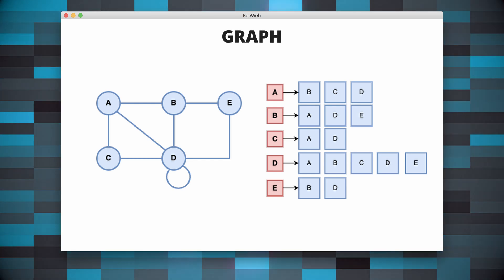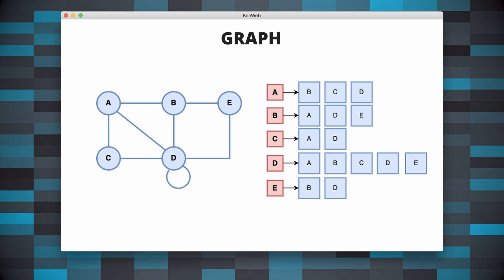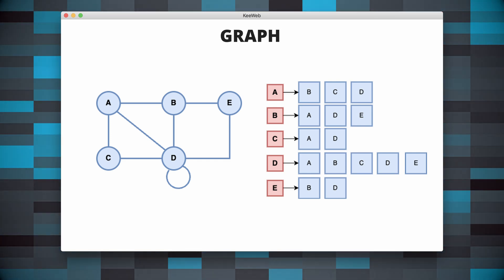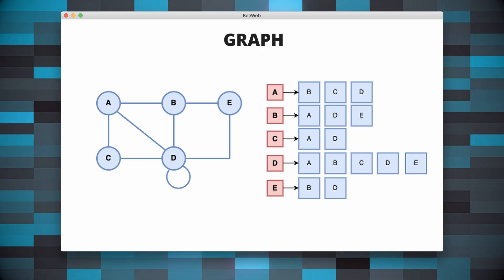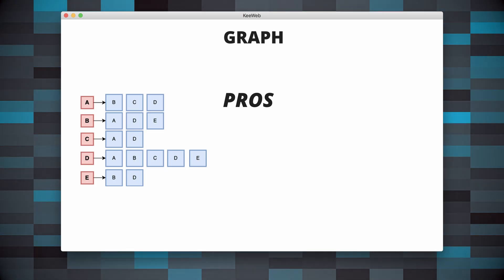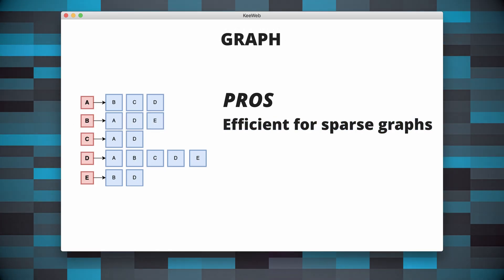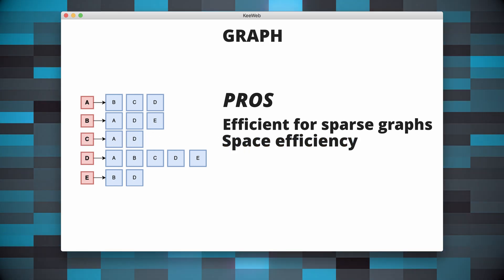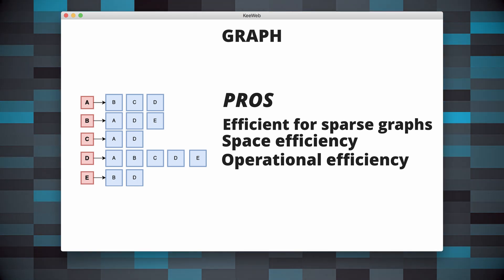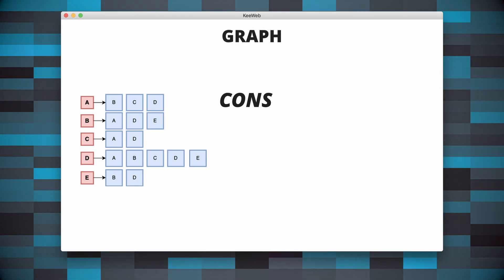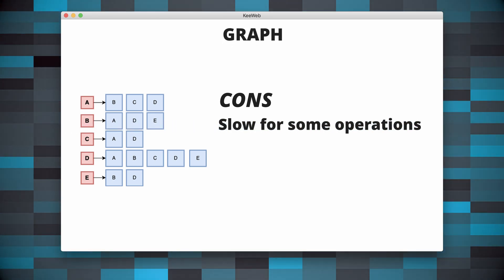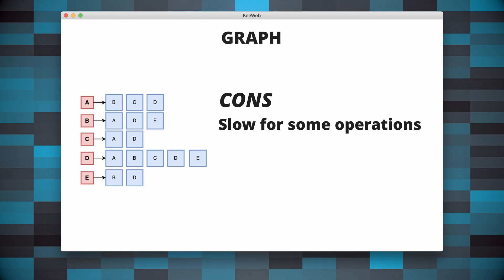An adjacency list instead is a collection of lists where each list represents the set of neighbors of a vertex. This representation is often more space efficient than adjacency matrix for sparse graphs. Pros in this case are that it is efficient for sparse graphs, it requires less space, and it is efficient for certain operations such as addition and removal of vertices. The cons instead is that it requires more time for certain operations such as checking if there is an edge between two vertices.